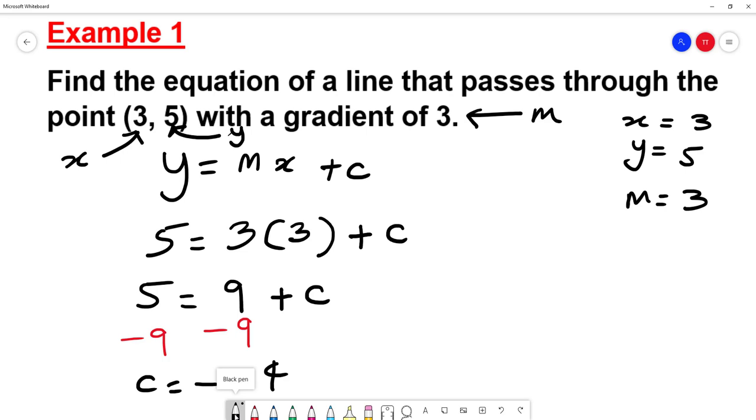So now that I've got -4, I can say, therefore, the equation of the line is Y = the gradient, which is 3, and X. And the Y intercept is -4.